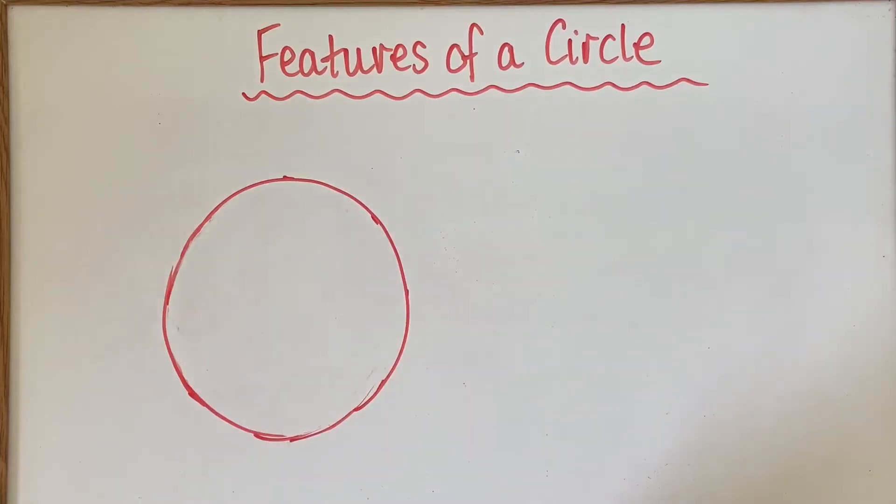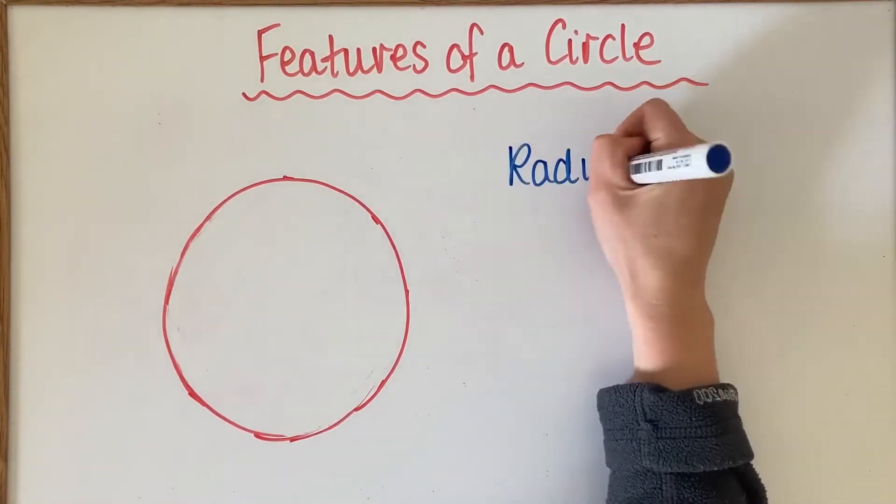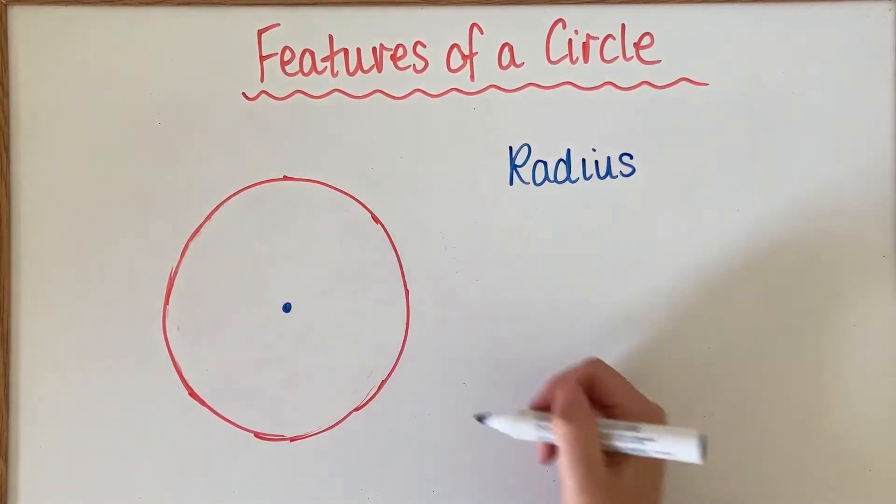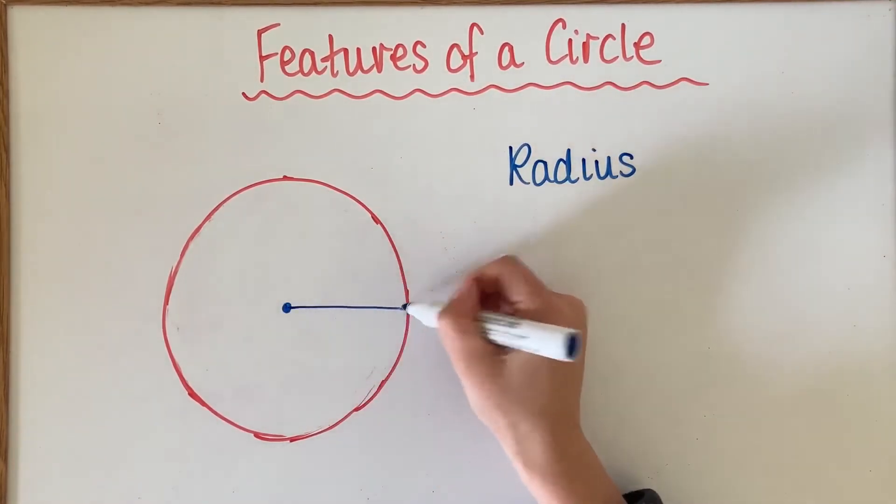All right, in this video you're going to be learning about different features of a circle. So the first feature we want to learn about is called the radius. The radius is the measurement from the center of the circle out to the edge.